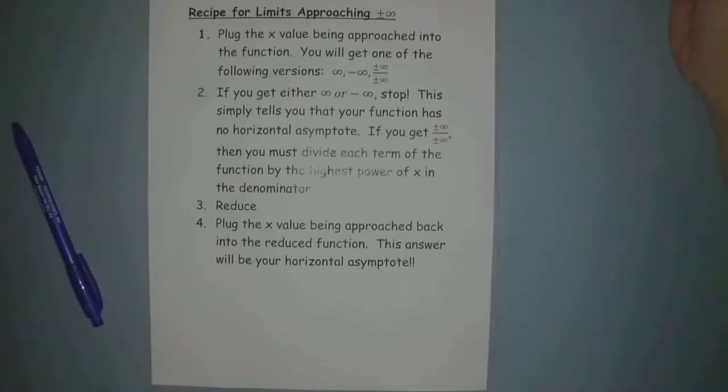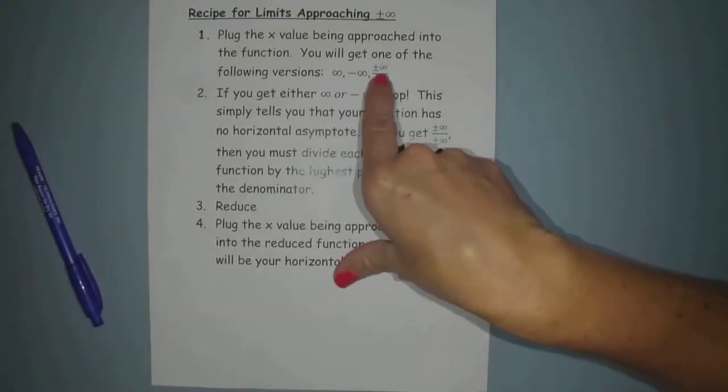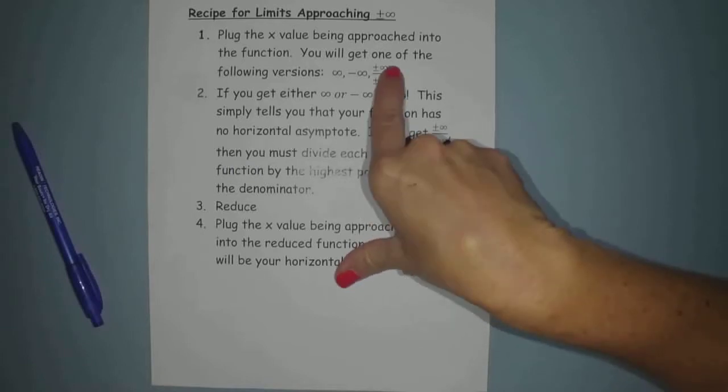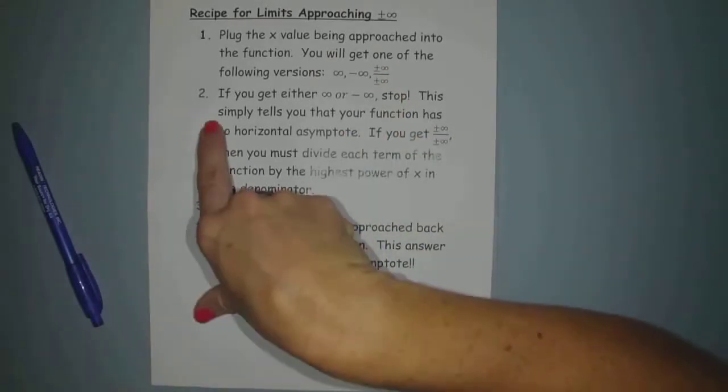So step one, plug the x value being approached into the function. You will get one of the following versions: you're either going to get infinity, negative infinity, or some version of plus or minus infinity over plus or minus infinity. So you move on to step two.